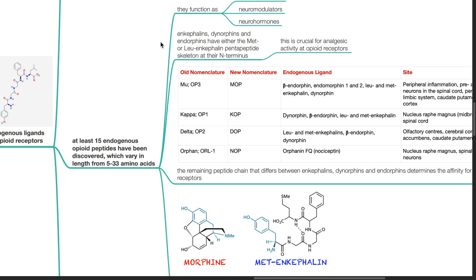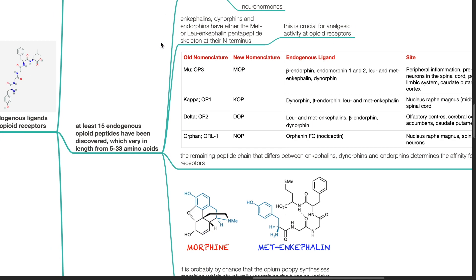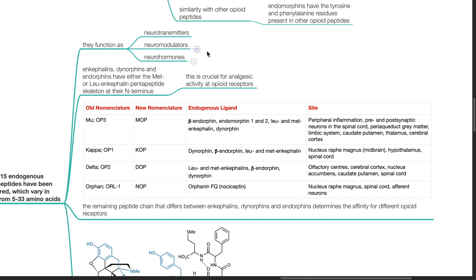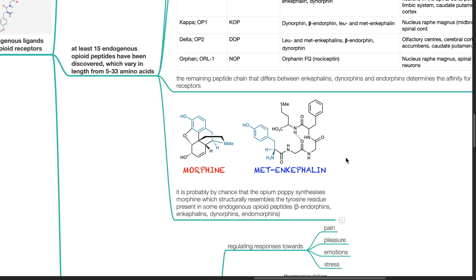At least 15 endogenous opioid peptides have been discovered which vary in length from 5 to 33 amino acids. They function as neurotransmitters, neuromodulators, and neurohormones. Enkephalins, dynorphins, and endorphins have either the methionine or leucine enkephalin pentapeptide skeleton at their N-terminus. This is crucial for analgesic activity at opioid receptors. The remaining peptide chain that differs between enkephalins, dynorphins, and endorphins determines the affinity for different opioid receptors as mentioned above. It is probably by chance that the opium poppy synthesizes morphine, which structurally resembles the tyrosine residue present in some endogenous opioid peptides, such as beta-endorphins, enkephalins, dynorphins, and endomorphins.